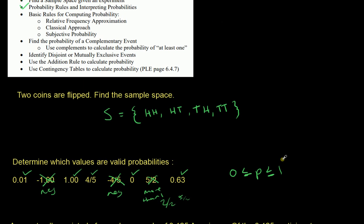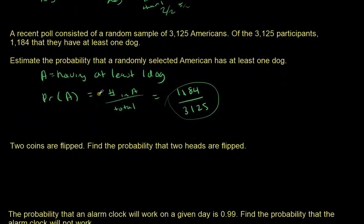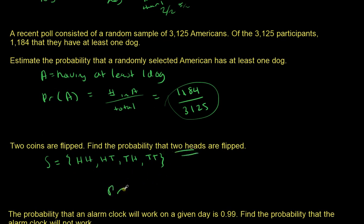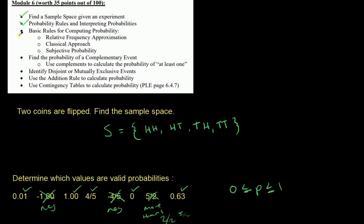Using the classical approach to probability — this is when all outcomes have equal probability, such as the two coins flipped. Our sample space was: head-head, head-tail, tail-head, and tail-tail. Each outcome has the same probability of occurring. What's the probability of getting two heads? The probability of head-head is the number of times it appears in the sample space — just once — divided by the total number of outcomes, which is four. So the probability is 1/4.